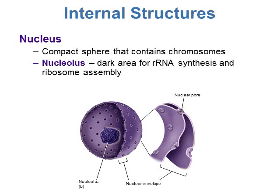Now we're going to look at the internal structures — get out your book to follow along. First, the nucleus: it's a compact sphere in the middle of the cell that contains all the chromosomes or DNA in your eukaryotic cell. Inside the nucleus is another region called the nucleolus, a darker area where RNA is synthesized and ribosomes are assembled. The ribosomal RNA helps with the function of the ribosome, which synthesizes proteins — including enzymes used in metabolism and proteins used for cell defense.